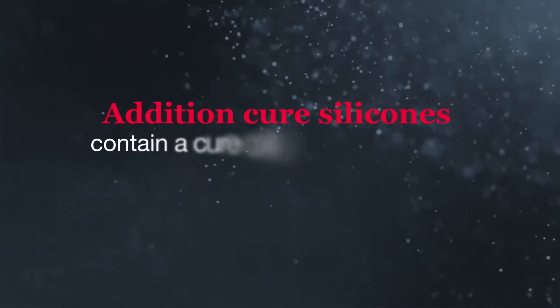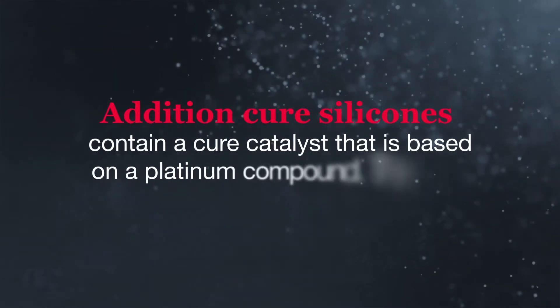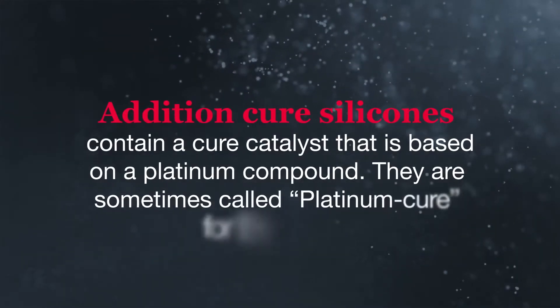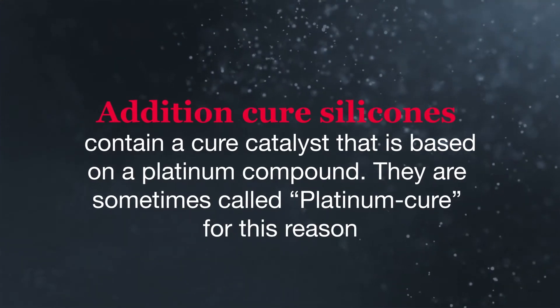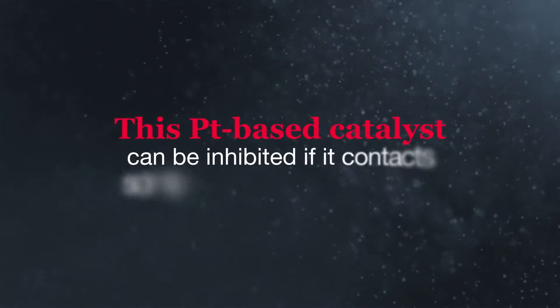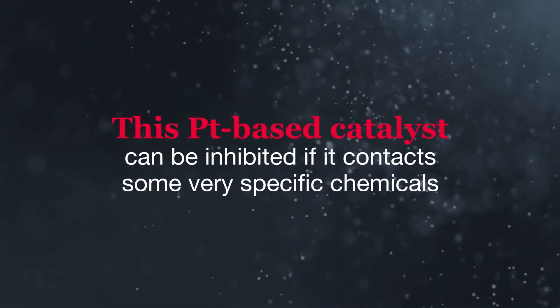Addition Cure silicones contain a cure catalyst that is based on a platinum compound. They are sometimes called platinum cure for this reason. This PT-based catalyst can be inhibited if it contacts some very specific chemicals.